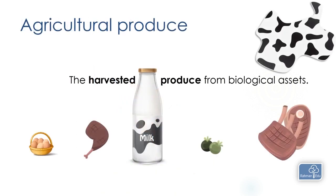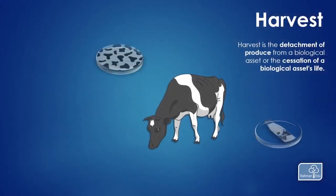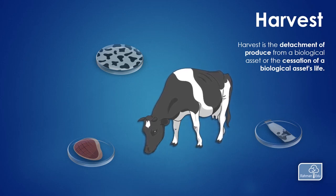The next thing to understand is what is agricultural produce. Agricultural produce is the harvested produce from a biological asset such as milk, meat, eggs, etc. And what is a harvest? Harvest is the process of detachment of produce from a biological asset or the end of the biological asset's life. For example, when you take out milk from a cow, that process is harvest.